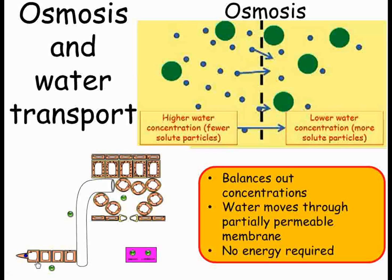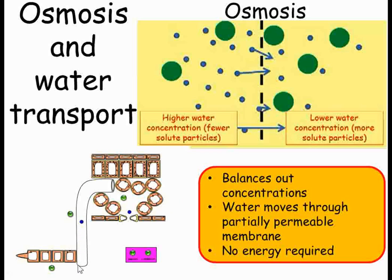Once in the root hair cell, the water is drawn up into the xylem and then up through the plant by transpiration. The leaves at the top of the plant are losing water, lowering the pressure in the xylem at the top. Just like sucking a drink up through a straw, the low pressure at the top means the high pressure from below pushes the water in the xylem upwards. The high pressure in the roots is caused by the water being drawn in by osmosis.